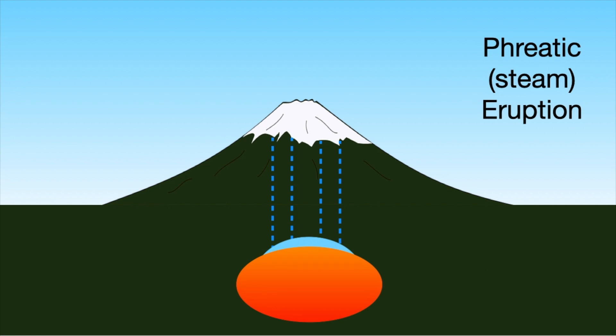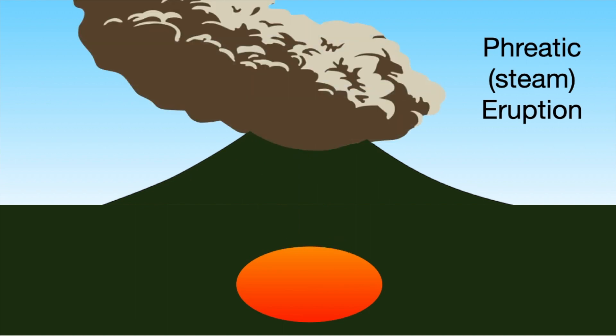But it can't expand, because there's a mountain on top of it. The pressure builds and builds until it causes an earthquake and a fissure is broken through. Once this avenue of release occurs, the water immediately vaporizes, expanding to 1,500 times its size, and literally blowing the top off of the mountain.